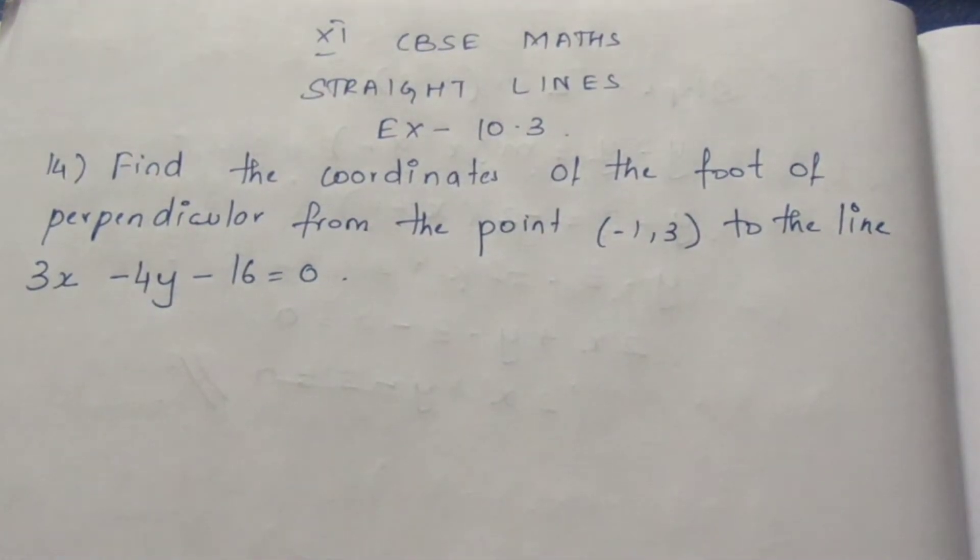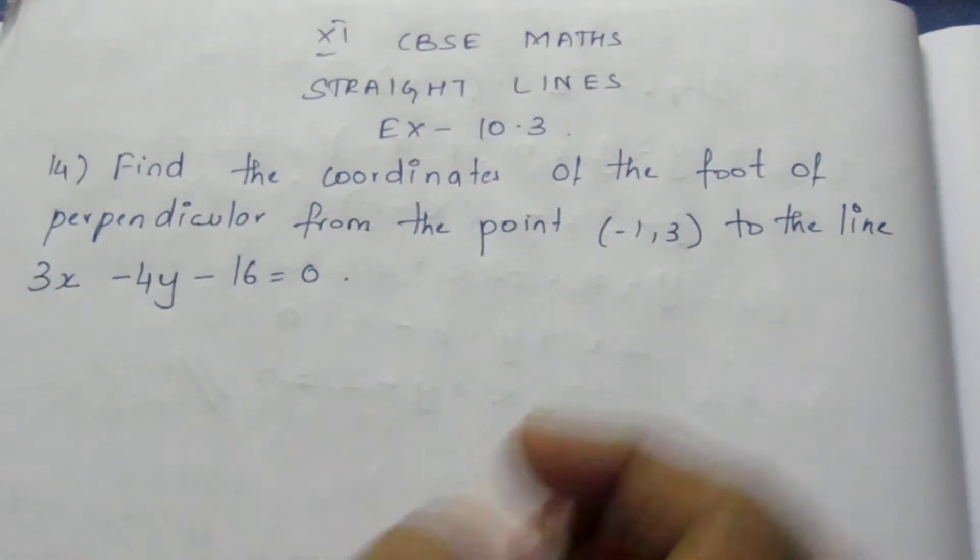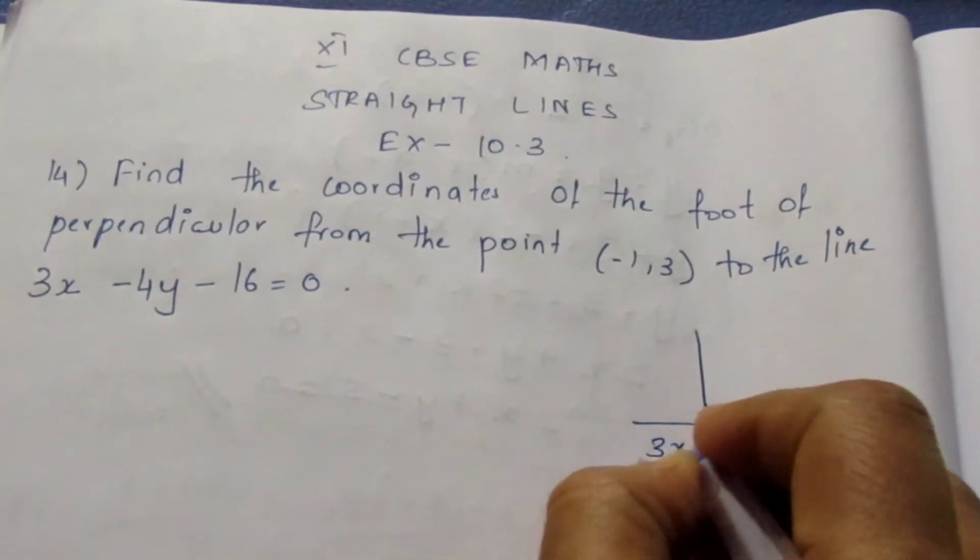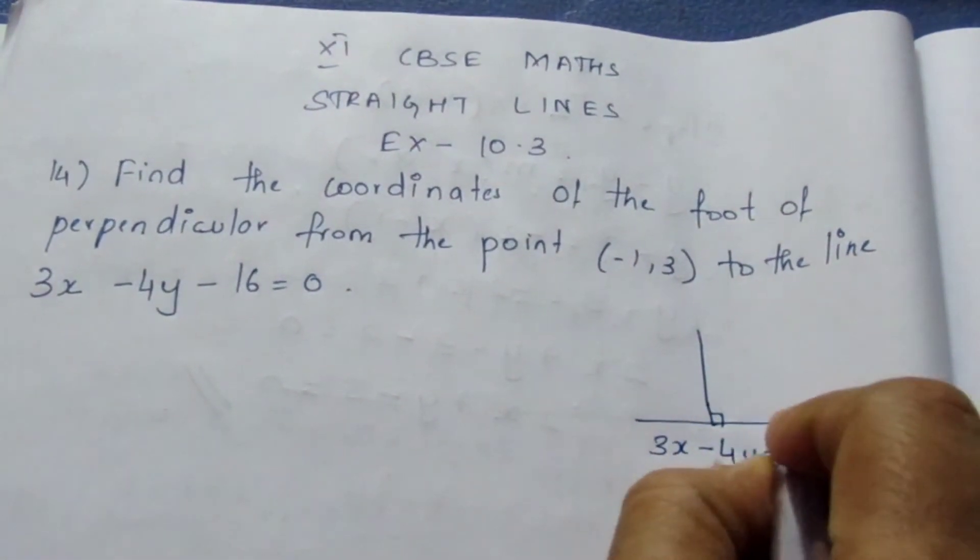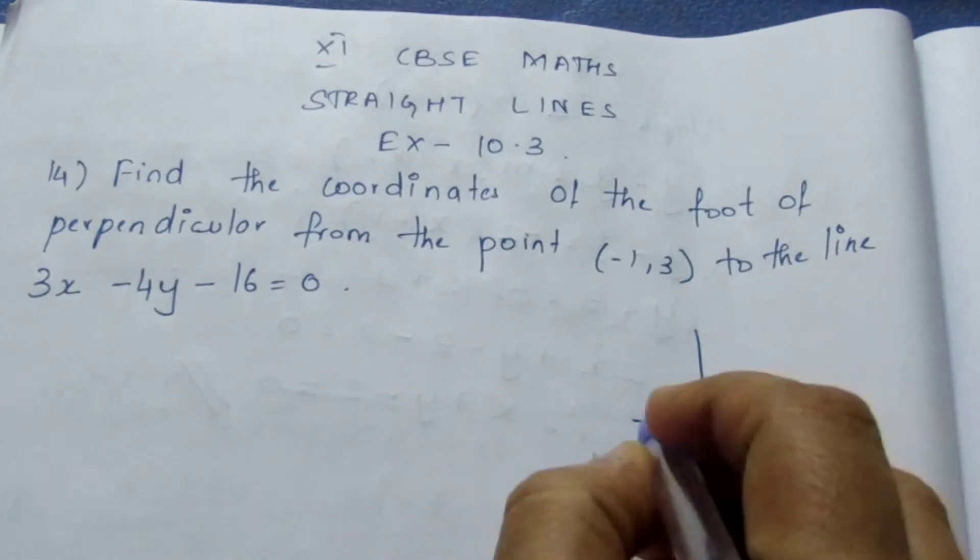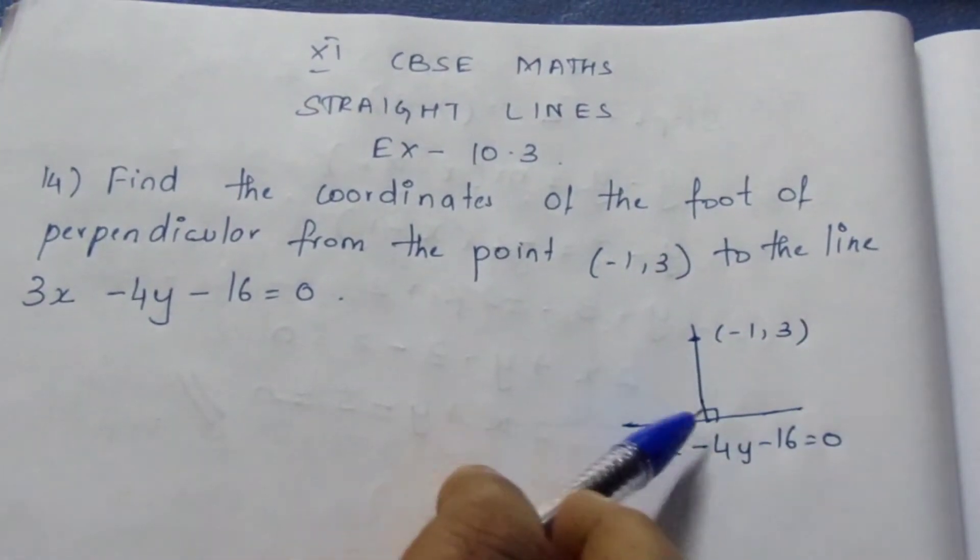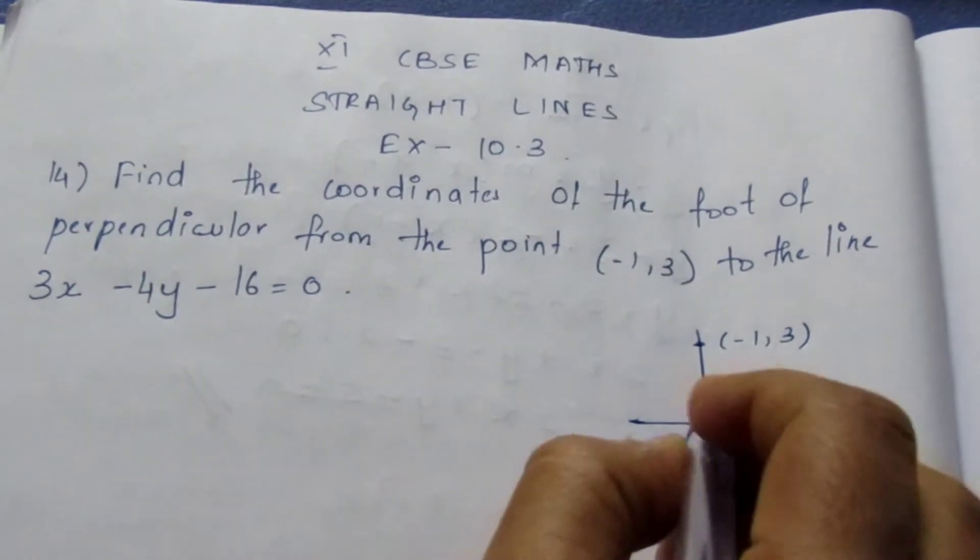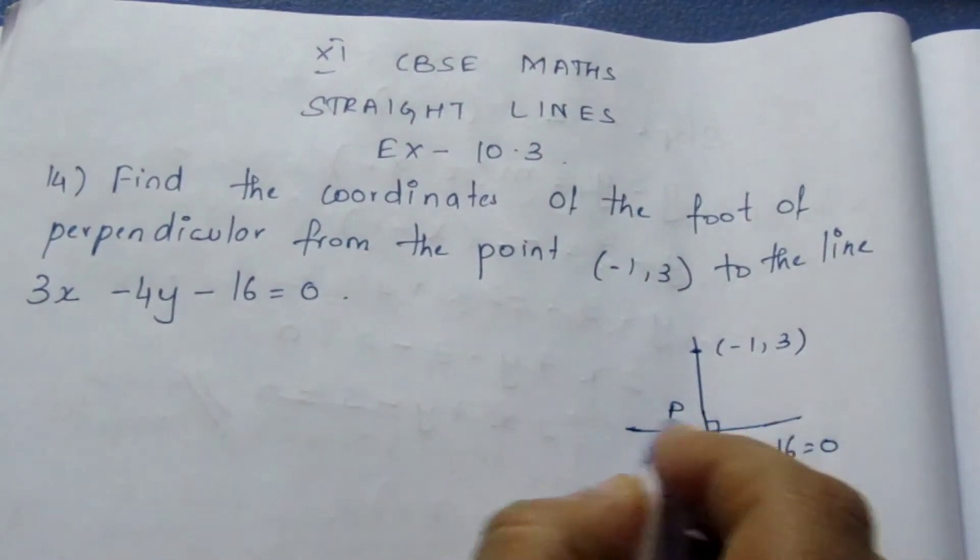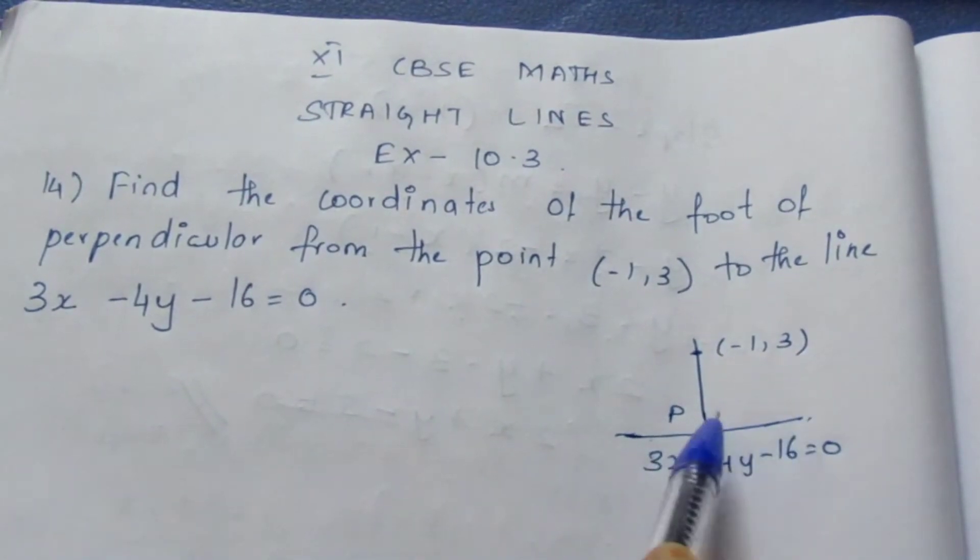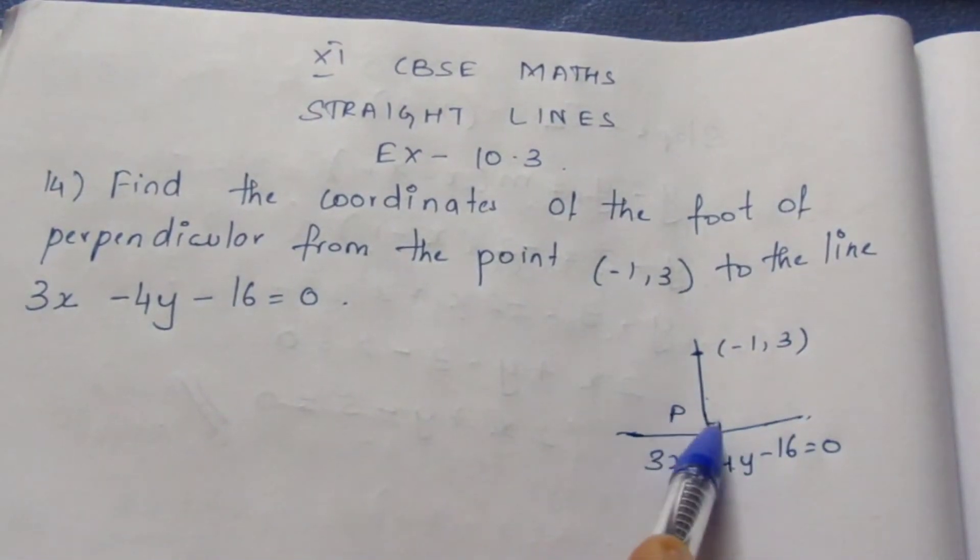Find the coordinates of the foot of the perpendicular from the point (-1,3) to the line 3x - 4y - 16 = 0. Here they have given a point (-1,3) and are asking us to find this point, asking us to find the coordinate of P. Here they have given an equation of this line and this line is perpendicular.